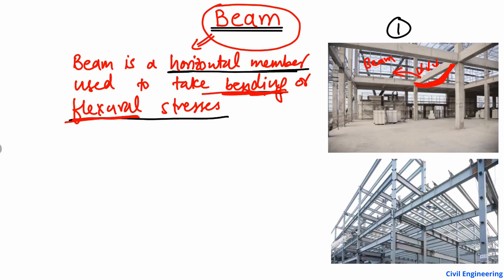Similarly, in the second diagram, we see different beams — this one is a horizontal member, this one is a horizontal member, and so on. All these horizontal members are beams. When these beams are loaded, there will be some load acting on them. Due to these loads, the beam will try to bend and we will have bending stresses. A member subjected to bending stresses, or able to resist bending and flexural stresses, is known as the beam member.